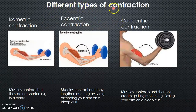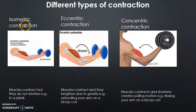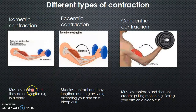Here I'm going to talk about different types of contraction. These include isometric contraction, eccentric contraction, and concentric contraction. Isometric contraction is where muscles contract but they do not shorten — for example, in a plank, or in basketball when you're bending down in a squat position for a jump ball.